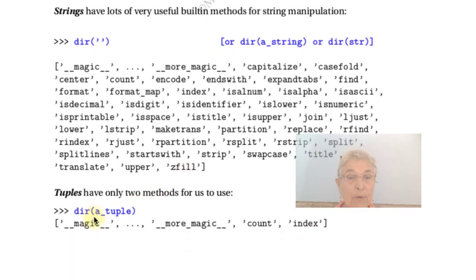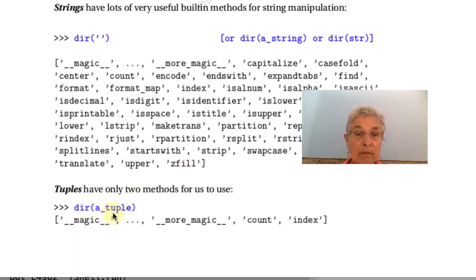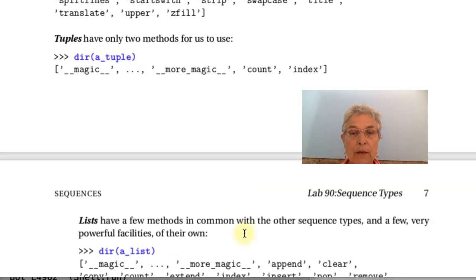Tuples. Here, we're doing a dir on a tuple. There's a bunch of magic, as always. And there are only two methods, count and index. Now, these are both referencing methods. There is no facility to change the data inside that tuple or to change it and return it to you. Nothing. They are just sitting there like constants.